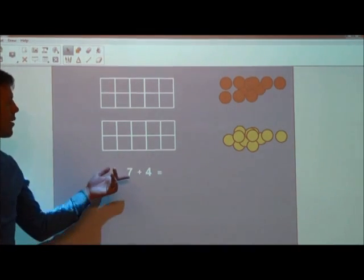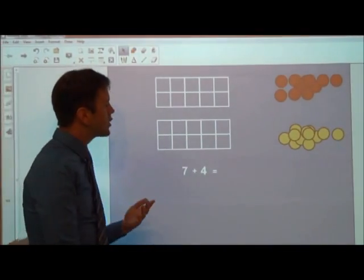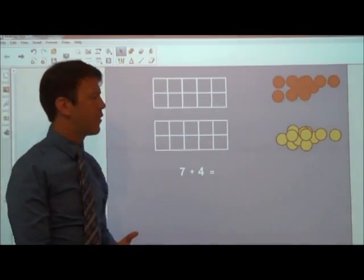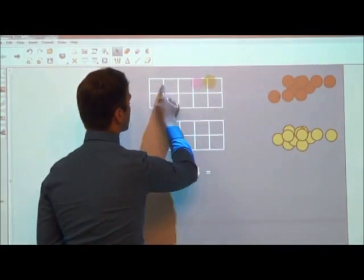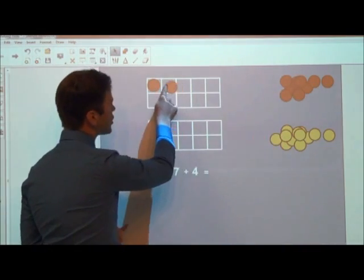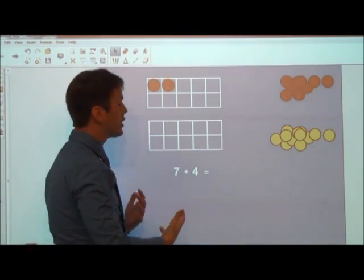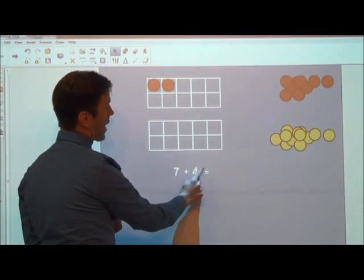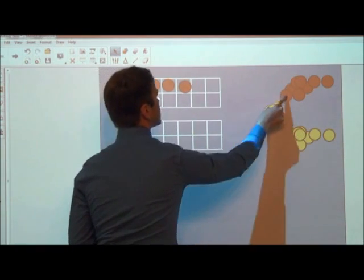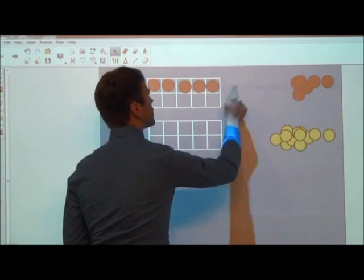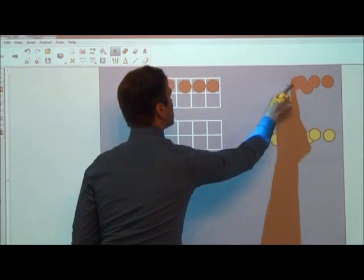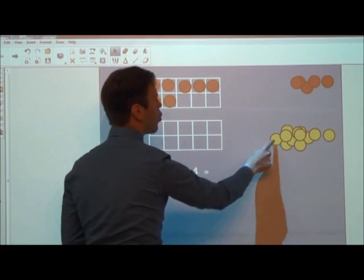So our problem is 7 plus 4. Since this goes over 10, we can easily use a 10 frame. We'll have our 7, so we'll put our 7 red chips. I would use 2 different colored chips so they can apply to the 2 different addends. So we have our 7 reds, and then our 4 yellow.